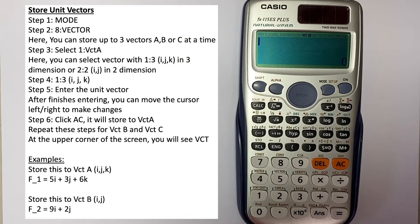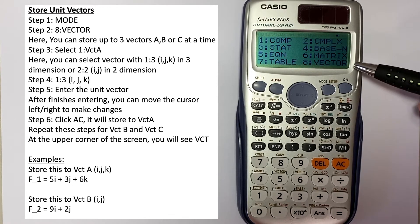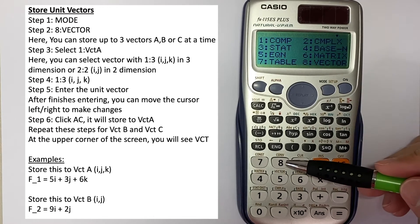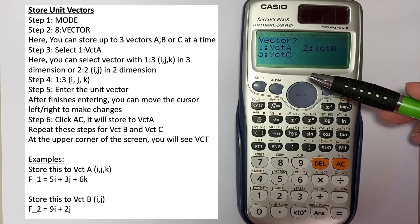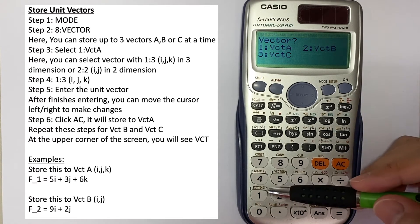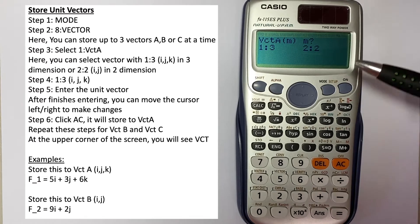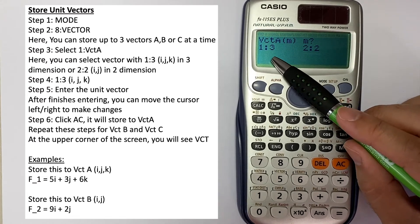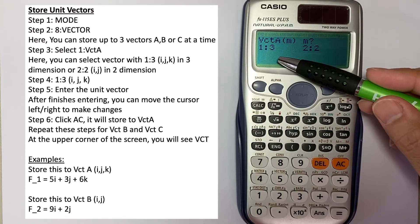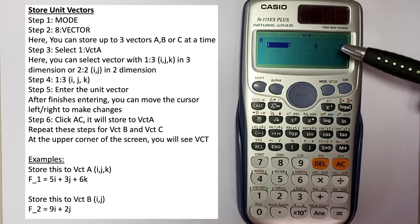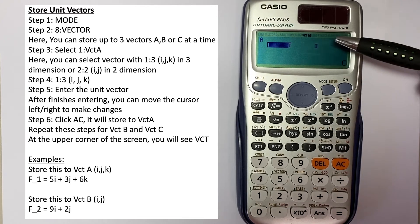To store unit vectors in ijk three-dimension, or ij in two-dimension, follow these steps. First, go to Mode and then number 8. You can see 'A' stands for vector, so select A. Here we can see that we can store up to three vectors: A, B, and C. If you select vector A, which is number 1, we have a unit vector in three dimensions ijk, or a unit vector in two dimensions ij.